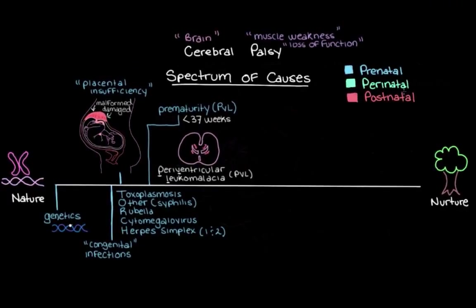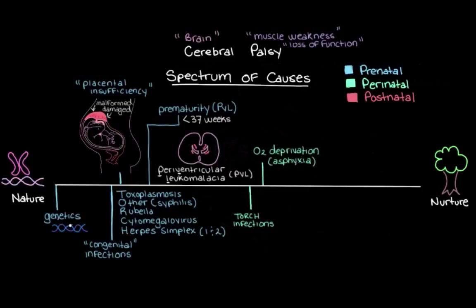In the perinatal period, during the birth process, TORCH infections can occur again — mom might pass one of these infections to her baby as it comes through the birth canal. The second perinatal event is oxygen deprivation, or birth asphyxia, which happens when something gets in the way of the baby's ability to breathe — for example, if the umbilical cord gets caught around the baby's neck during delivery. We used to think that oxygen deprivation from birth complications was the main cause of cerebral palsy, but now we know this accounts for less than about 10% of cases, and the majority of causative events actually happen during the prenatal period.